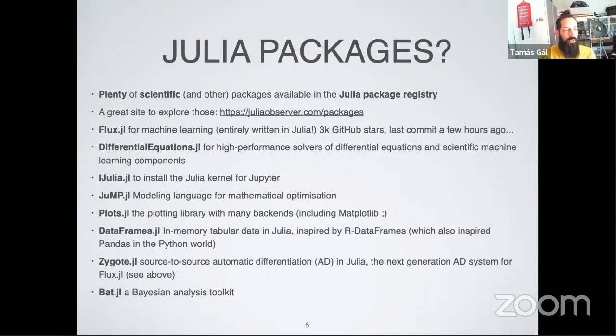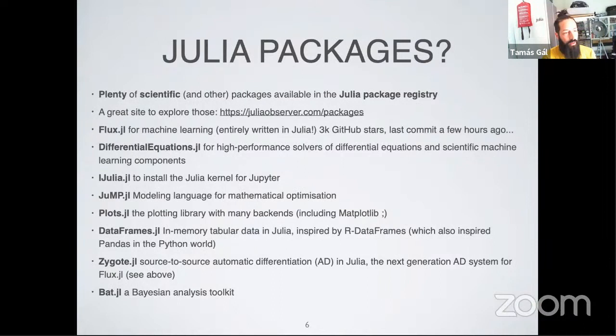You might wonder if Julia has packages — it's been around about 8-9 years and has many scientific packages. The Julia Observer site lets you explore popular packages. Flux.jl is a machine learning package written entirely in Julia, meaning you can alter every aspect of the code. It has around 3,000 GitHub stars and is actively maintained.